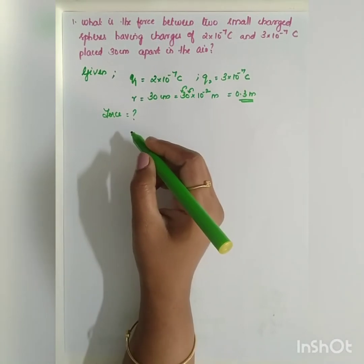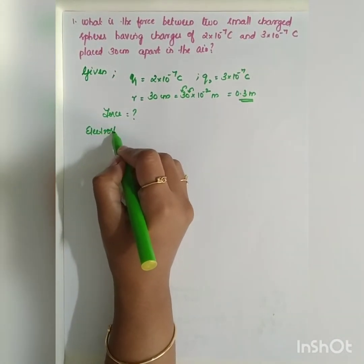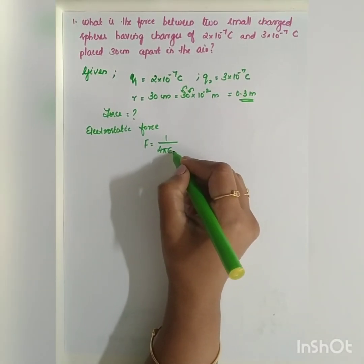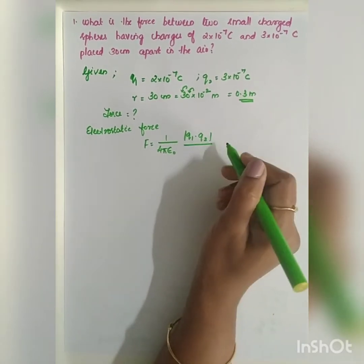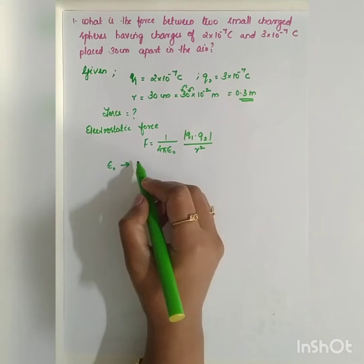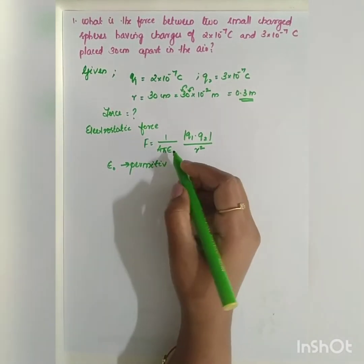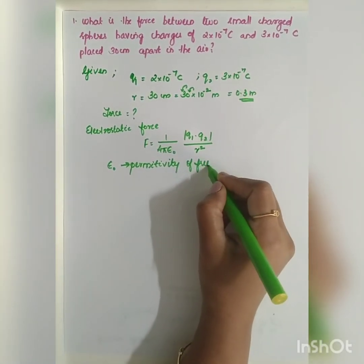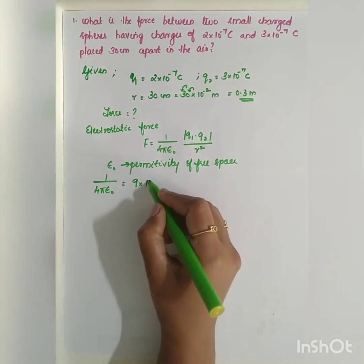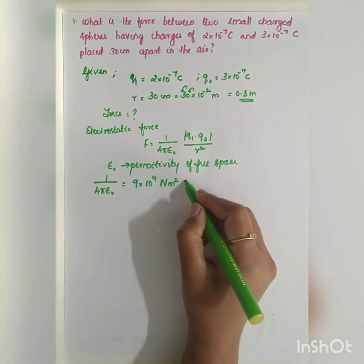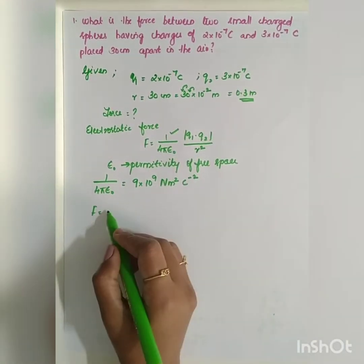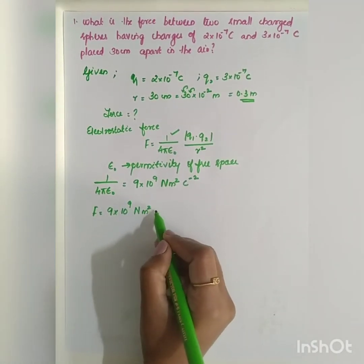As per Coulomb's law, the electrostatic force is given by the formula: F = (1/4πε₀) × (Q1 × Q2) / R². Here ε₀ is the permittivity of free space, and the value of 1/4πε₀ is equal to 9×10⁹ newton meter squared per coulomb squared, which can also be written as coulomb raised to minus 2.